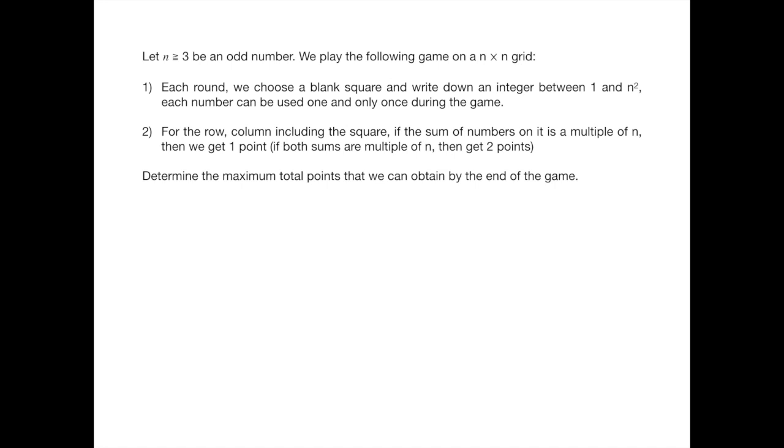Today we are going to talk about problem 2. We are given an odd number n larger than 3 and we want to play the following game on an n by n grid. At each round we choose a blank square on this grid and write down an integer on it between 1 and n squared, under the condition that each number can be used one and only once during the game.